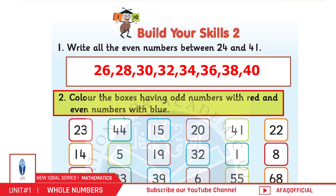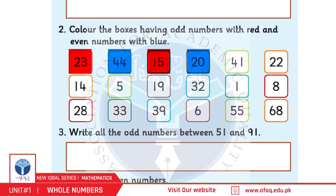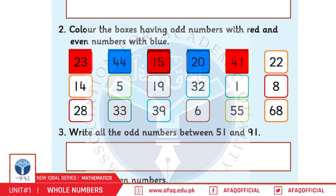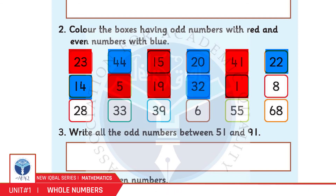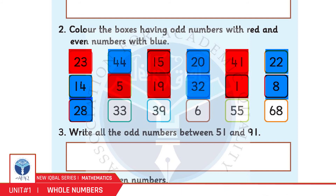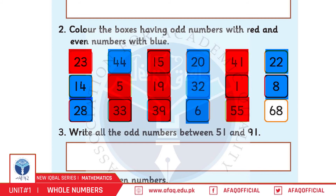Question number 2: Color the boxes having odd numbers with red and even numbers with blue. 23 — red; 44 — blue; 15 — red; 20 — blue; 41 — red; 22 — blue; 14 — blue; 5 — red; 19 — red; 32 — blue; 1 — red; 8 — blue; 28 — blue; 33 — red; 39 — red; 6 — blue; 55 — red; 68 — blue.